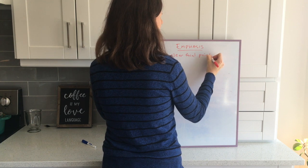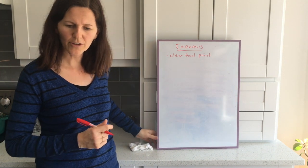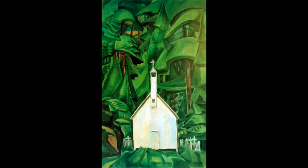Let's have a look at this image - it's the church painted by Emily Carr. This is a really great example of emphasis because it's so obvious what she wants you to look at. If you're thinking the focal point must be the church, then you are right. The point of emphasis is the church. There are a whole bunch of different ways that Emily Carr achieves emphasis here.